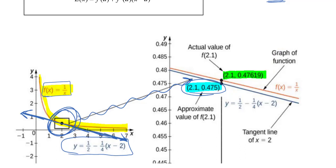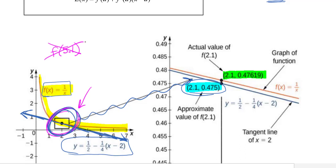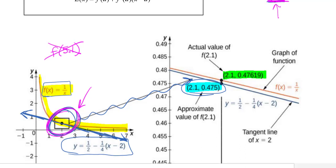An important thing to note about linear approximations: if I wrote the equation of the tangent line at x = 2, a linear approximation would not work for f(5.1). I cannot use the tangent line at 2 to estimate something really far away from 2. The x value you want to approximate needs to be really close to where that point of tangency occurred.